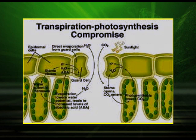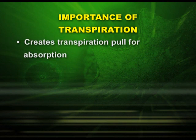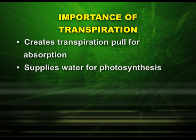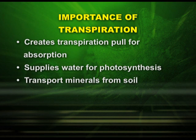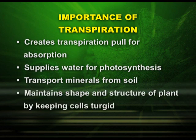We also see the transpiration-photosynthesis compromise. Carbon dioxide is taken inside for photosynthesis and water is given out by transpiration. The importance of transpiration in plants includes: it creates transpiration pull for water absorption; it supplies water for photosynthesis; it transports minerals from the soil; and it maintains the shape and structure of the plant by keeping cells turgid.